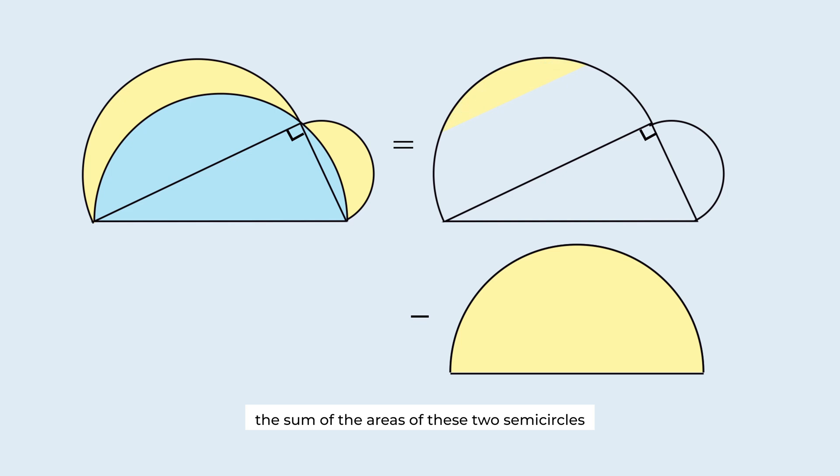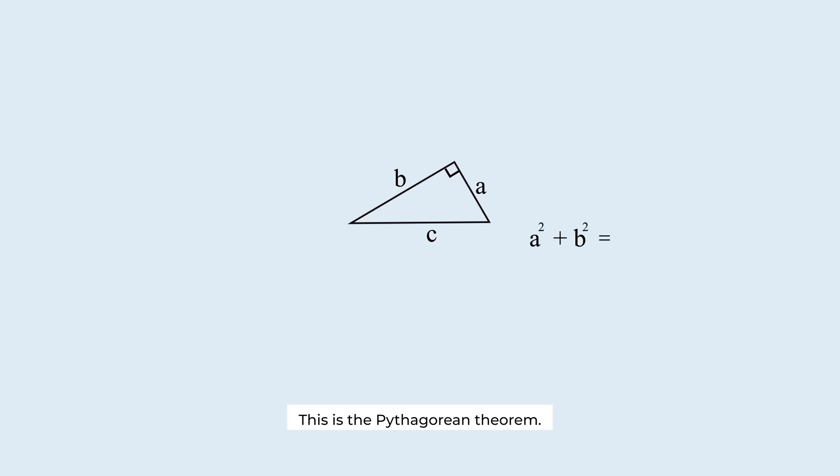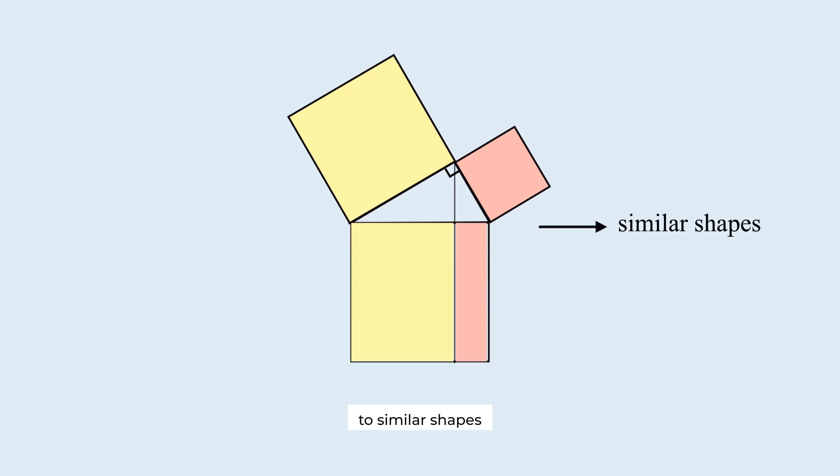Now, notice that the sum of the areas of these two semicircles is equal to the area of this largest semicircle. This is the Pythagorean theorem. The sum of the areas of these two squares is equal to the area of this square. We can extend this theorem to similar shapes based on these three sides.